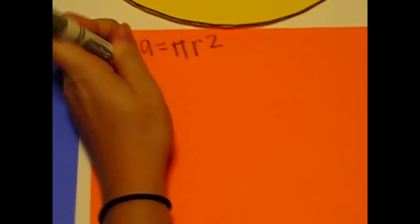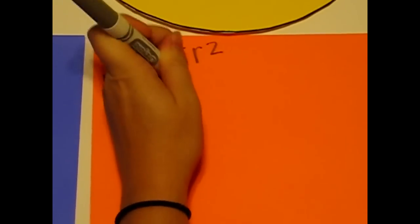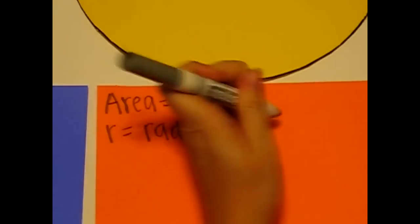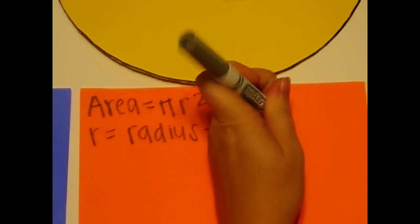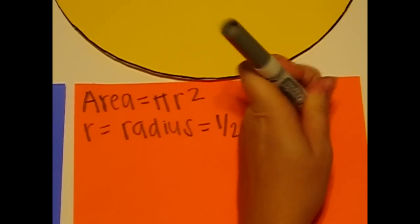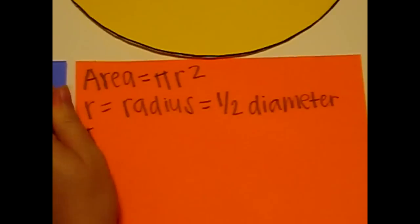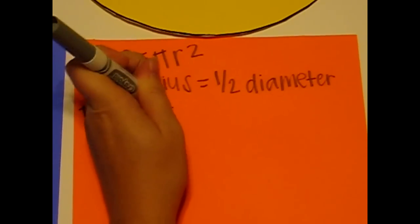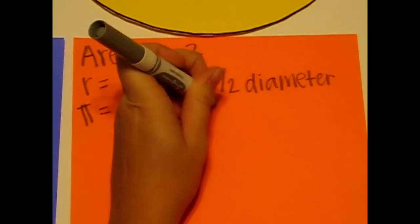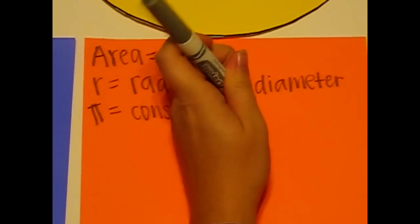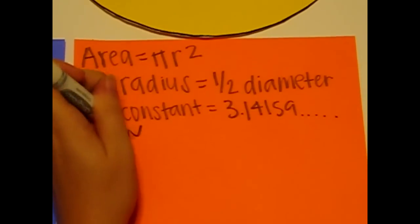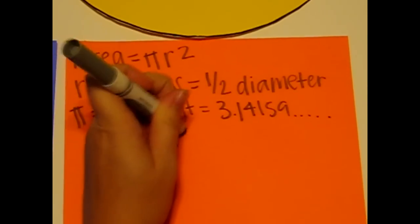Now the r stands for radius, which is also half of the diameter. The pi is a constant, and it equals 3.14159, and it keeps going on and on. So we round it off to 3.14.